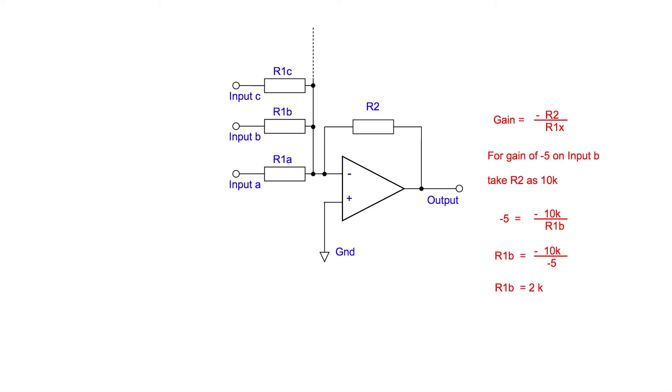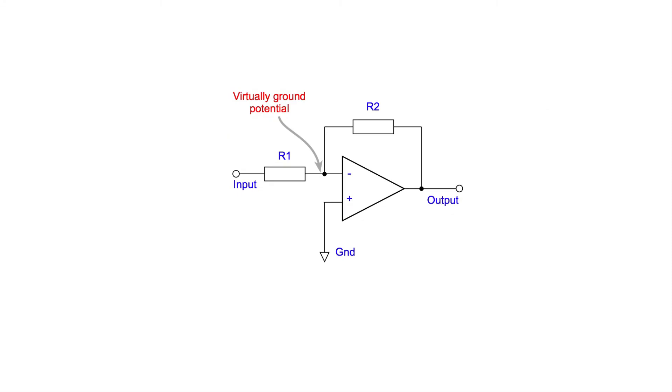We also need to think about the impedance of the different inputs. Returning to the basic inverting amplifier circuit, we remember that the junction of the inverting input, R2 and R1, is at a virtual earth potential. This means that R1 is effectively connected to ground. The resistance seen looking into the circuit, then, is that of R1.